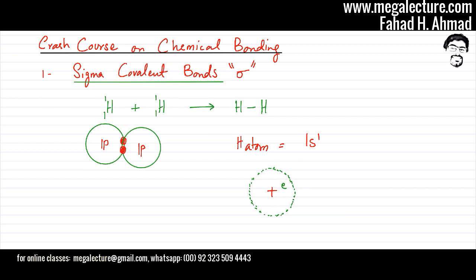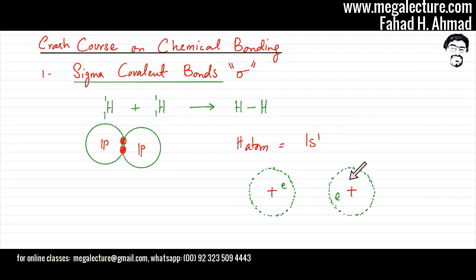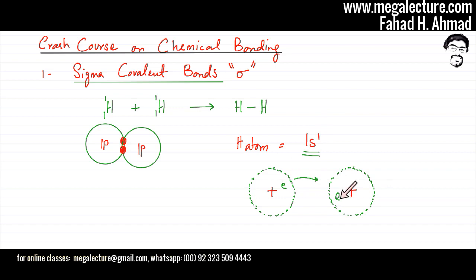There's another hydrogen atom that looks exactly the same — one proton and one electron whizzing around in a spherical area. The 1s orbital can accommodate a maximum of two electrons, so it needs one more electron. This hydrogen sees the other hydrogen atom's electron and tries to attract it, and the other hydrogen does exactly the same — both trying to pull the electrons toward each other. Eventually the two electrons get stuck somewhere in the middle.